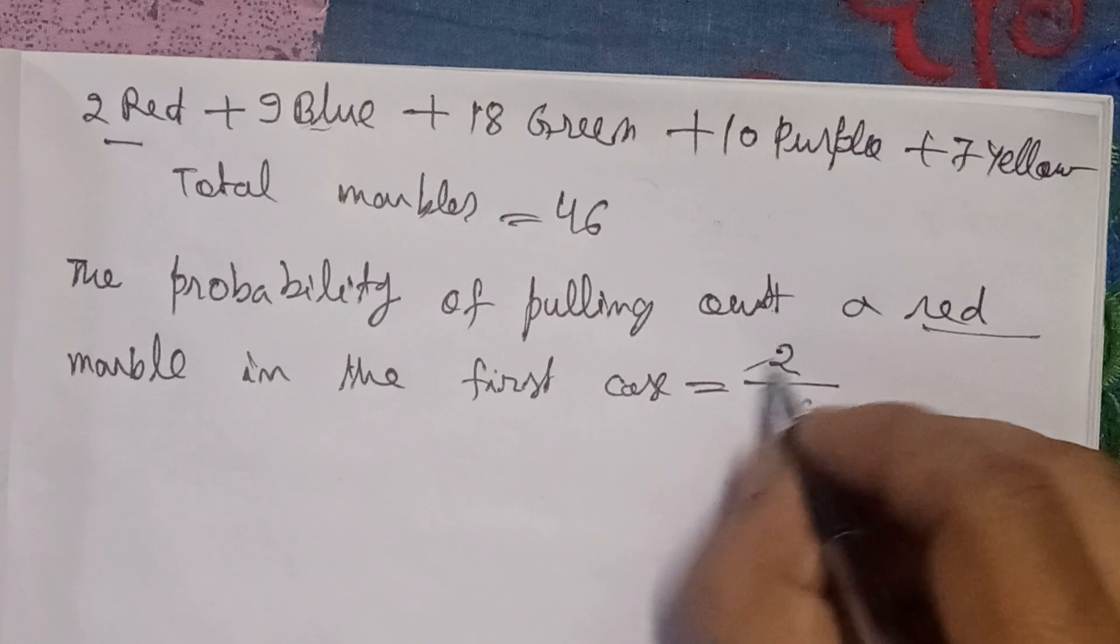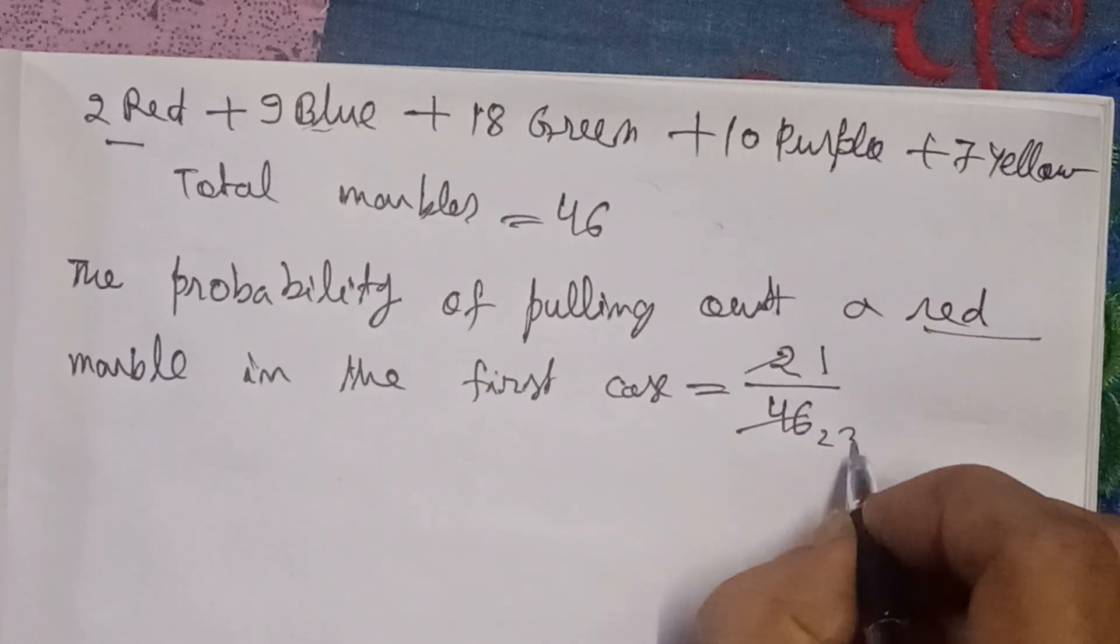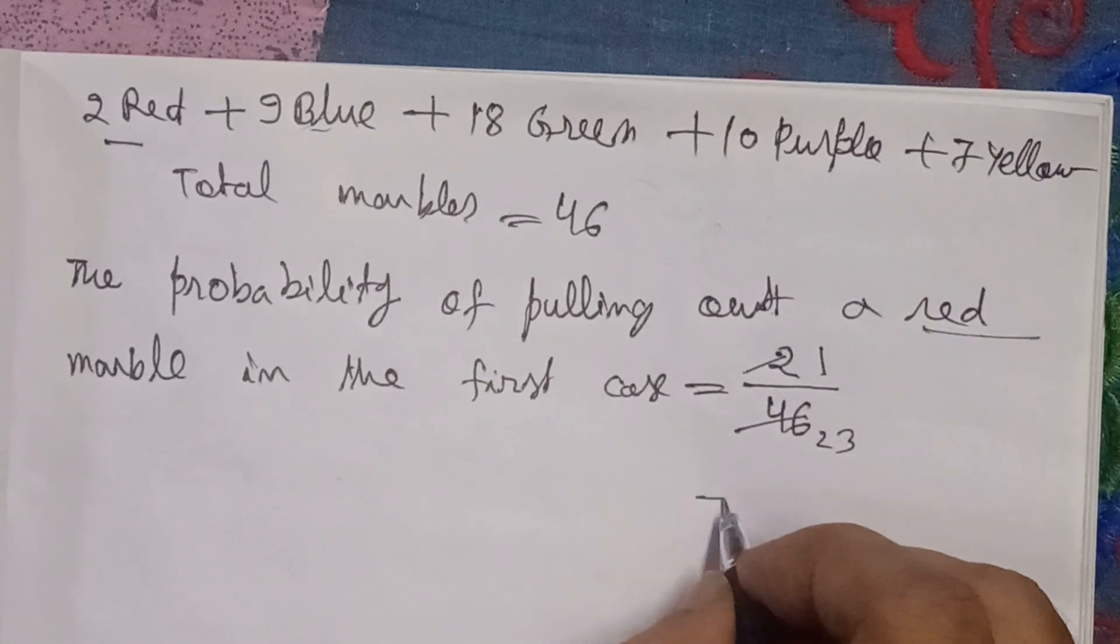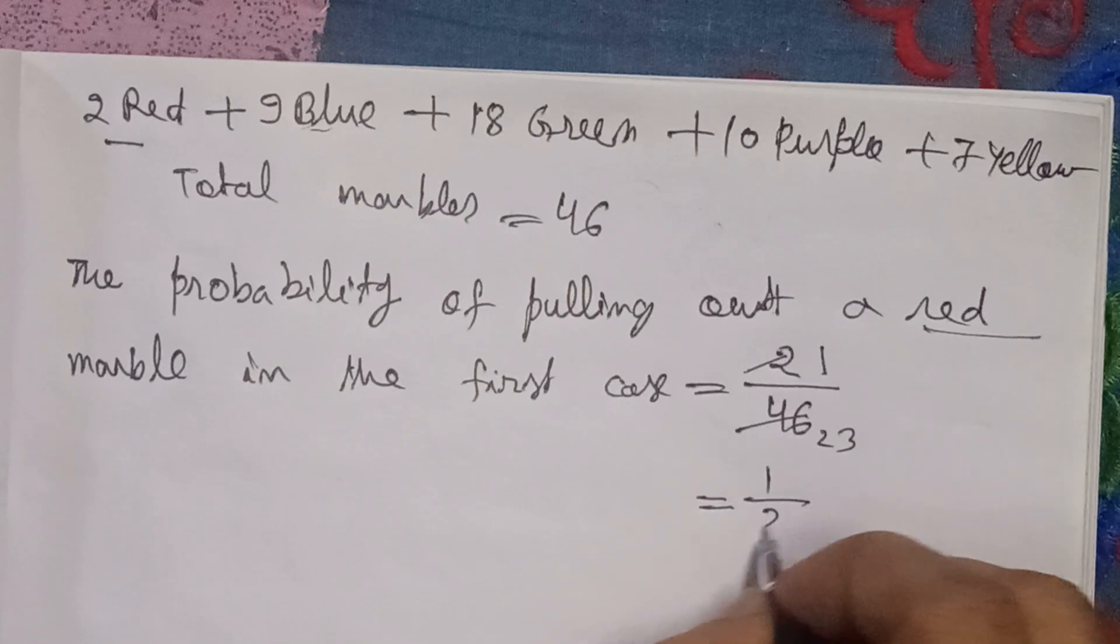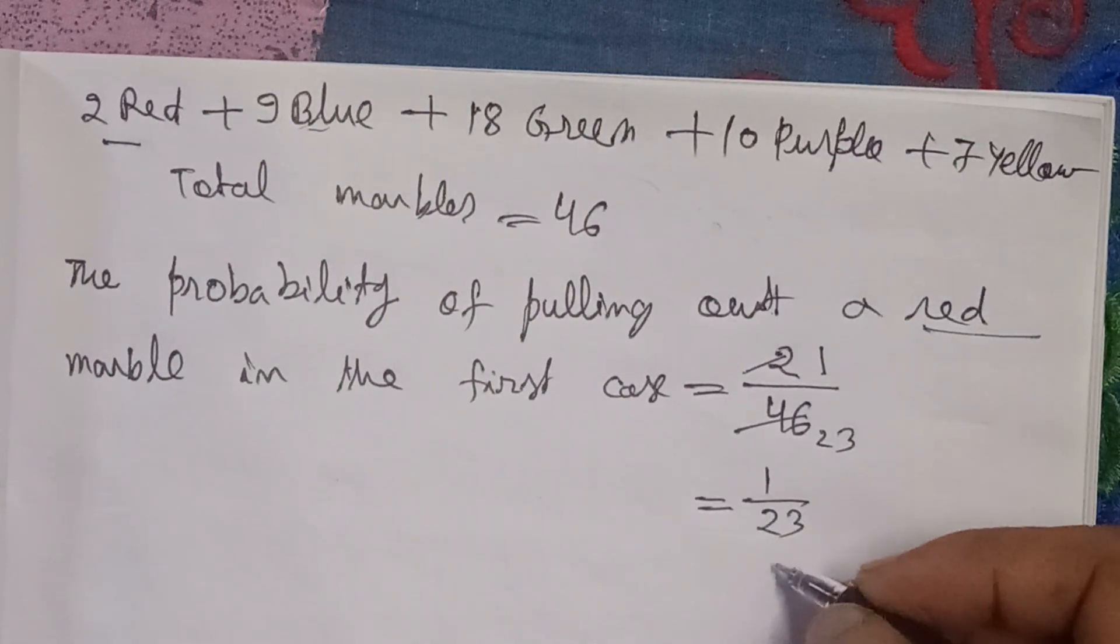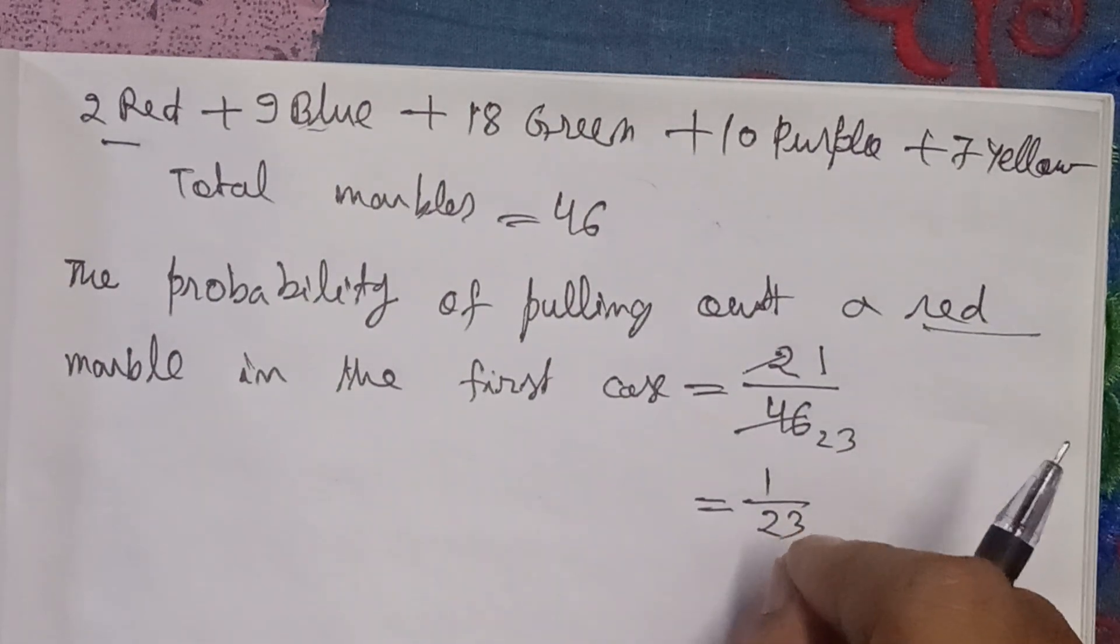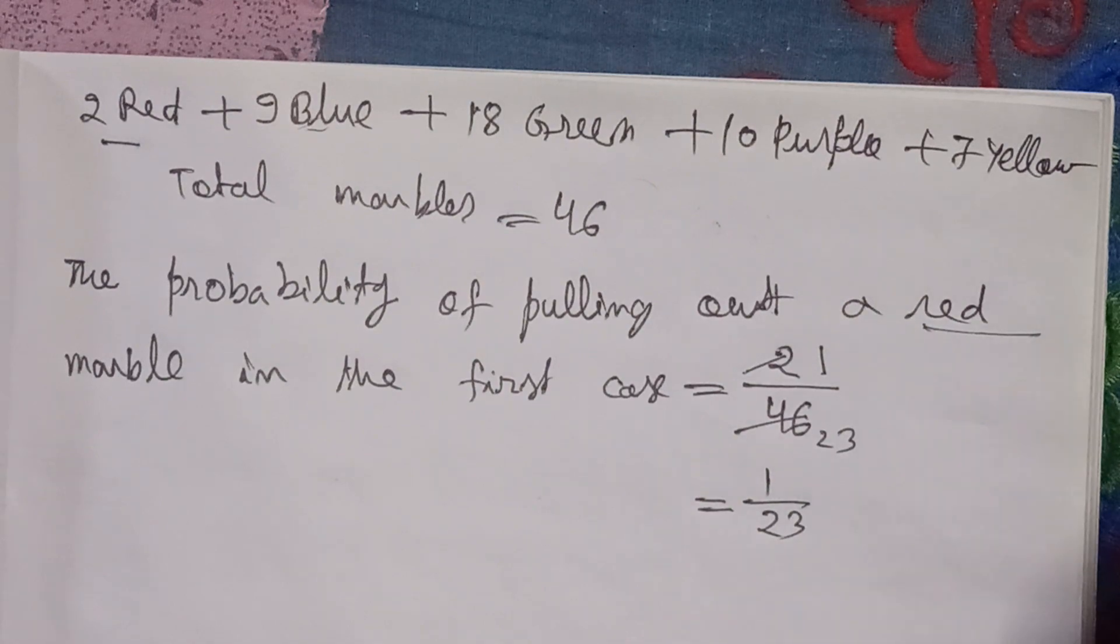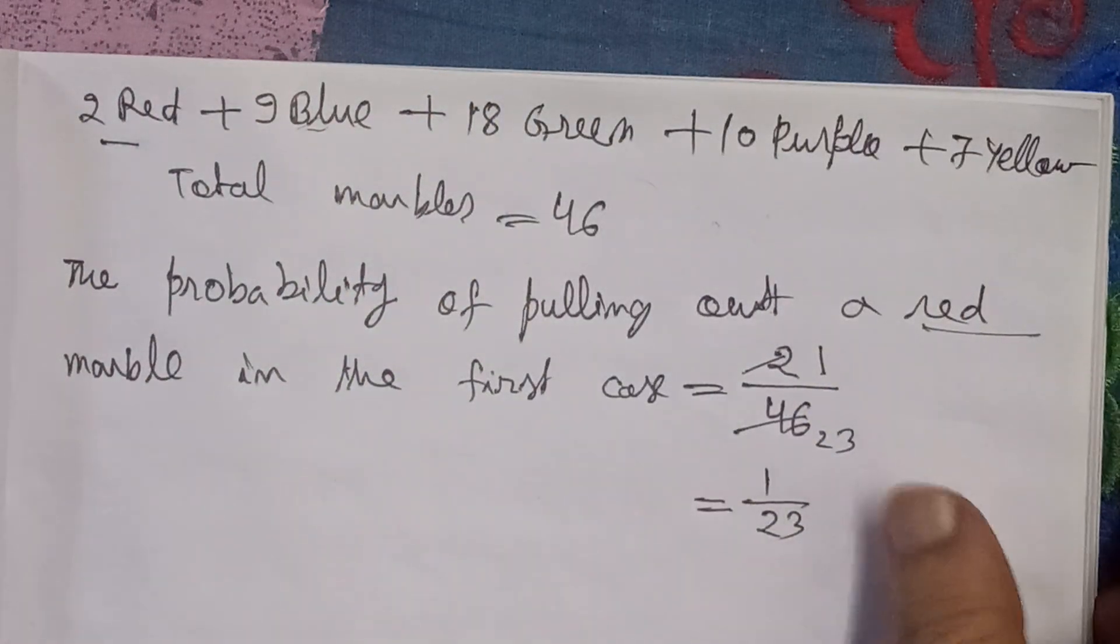which equals 1/23. So on the 23rd day, the probability of drawing a red marble when we draw the first marble from the bag is 1/23. After drawing this marble,